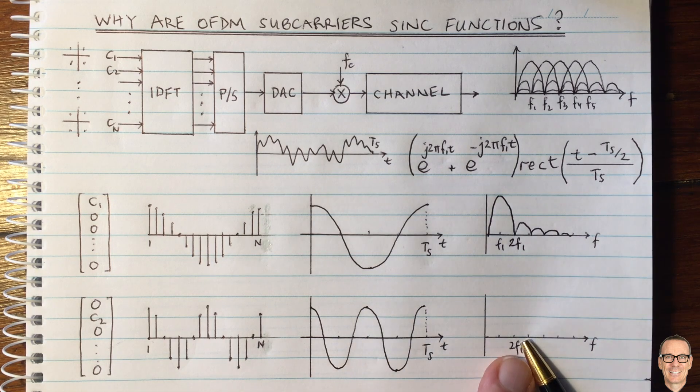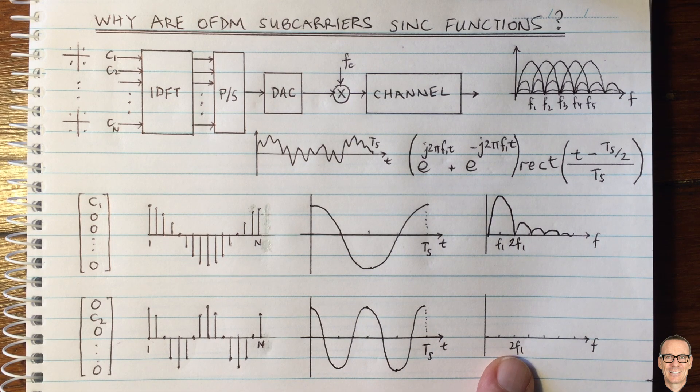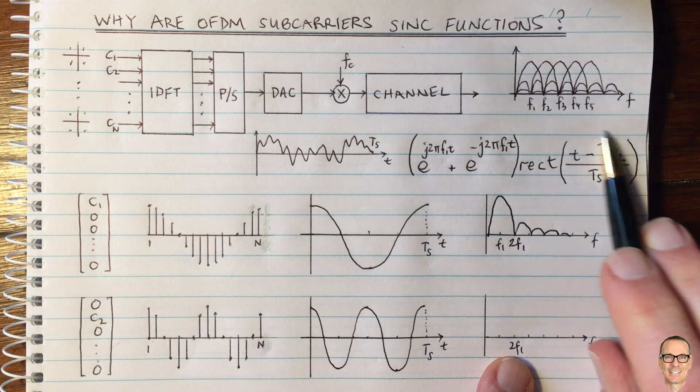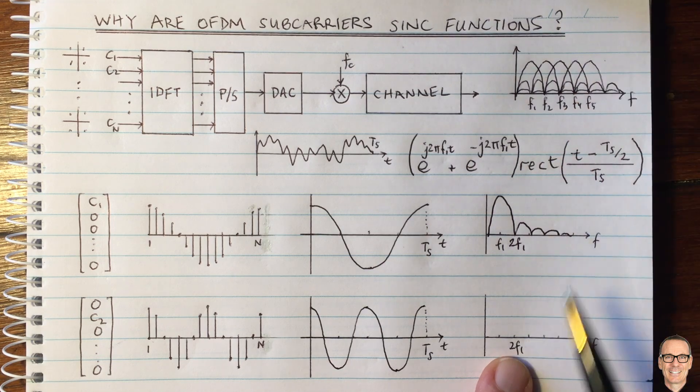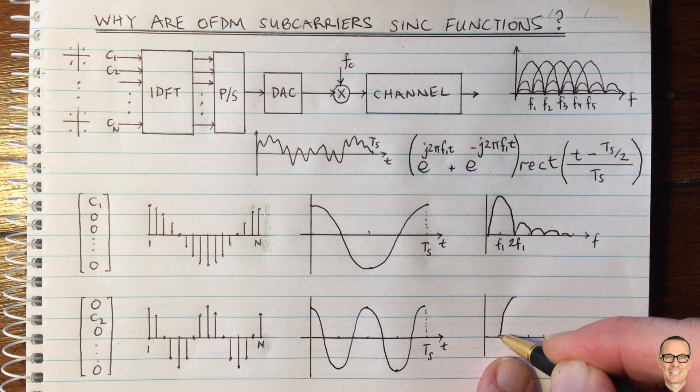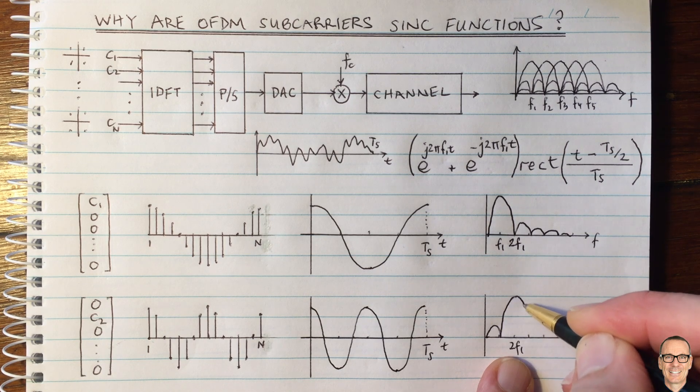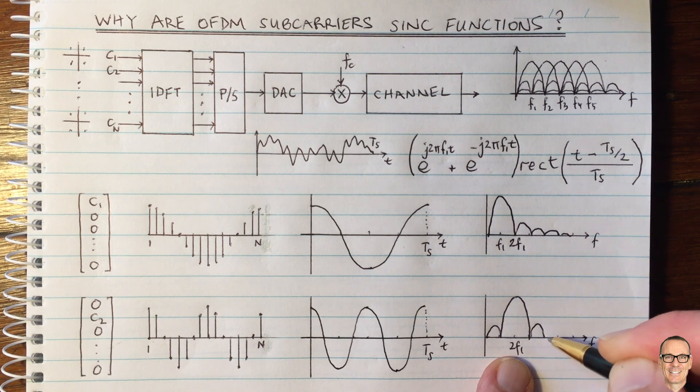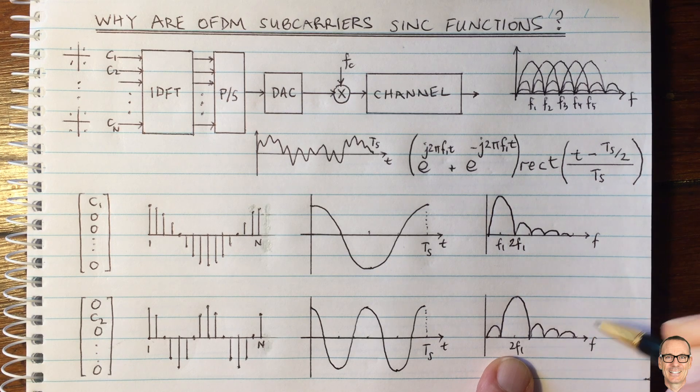And so in the frequency domain, again, the Fourier transform, we've still got the sinc function from the rect, and it's going to now be convolved with a delta function at twice F1. So now we have this function here. And of course,